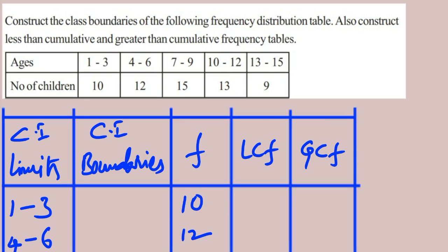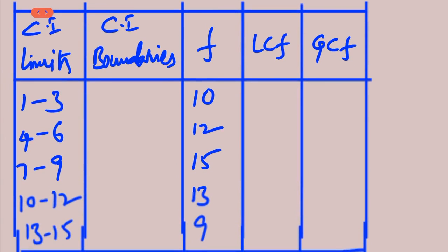The first column is class intervals given in limits. If the class intervals are inclusive class intervals, they have lower limits and upper limits. If they are exclusive class intervals, they have boundaries. We can observe: if the upper limit of one class and the lower limit of the next class are equal, those are exclusive class intervals. If they are different, those are inclusive class intervals. Here, 1 is the lower limit, 3 is the upper limit, 4 is the lower limit, 6 is the upper limit — so these are inclusive class intervals.